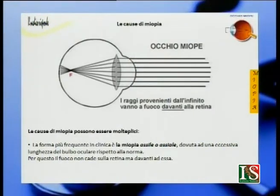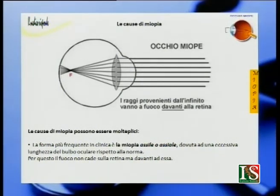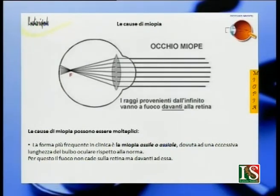E la miopia da indice? Esistono diversi tipi di miopia. I più diffusi sono la miopia assile, quella da indice, da cheratocono e altre forme. La prima è la miopia assile o assiale, la più frequente. La miopia assile è dovuta a un'eccessiva lunghezza del bulbo oculare rispetto alla norma. Per questo il fuoco non cade sulla retina ma davanti ad essa.